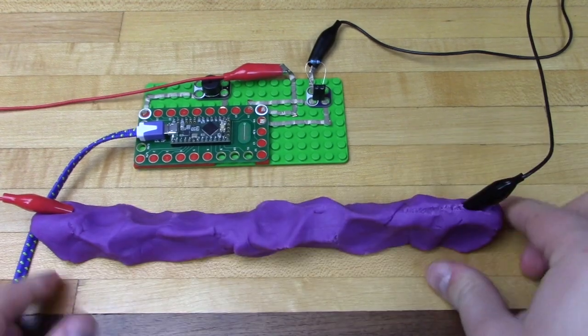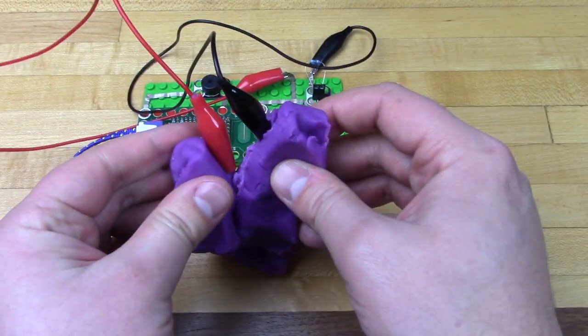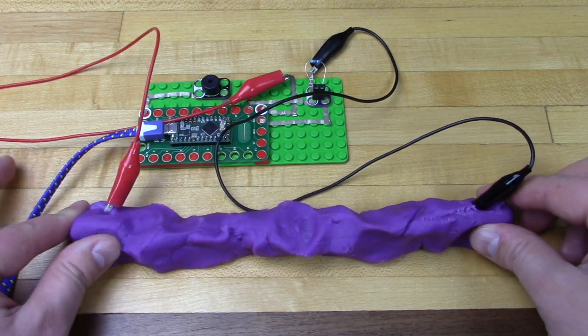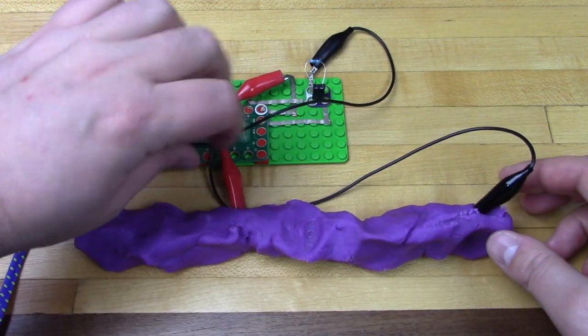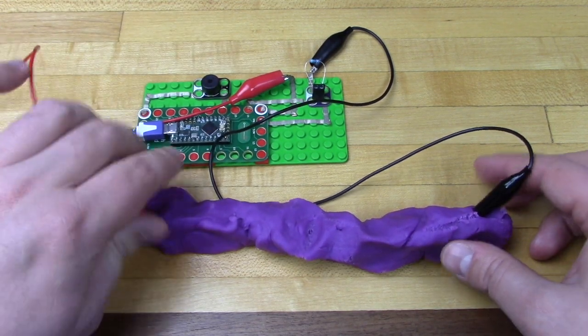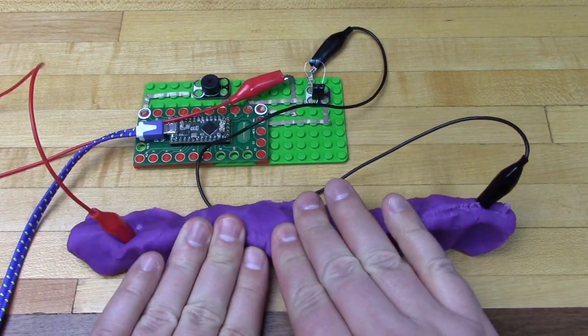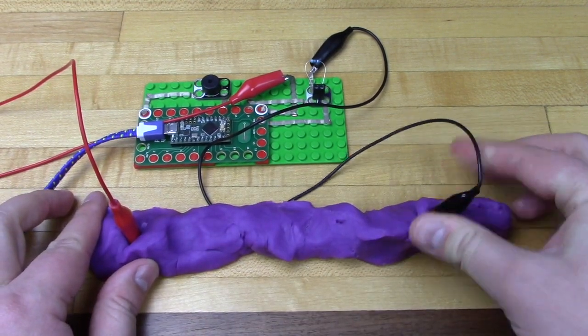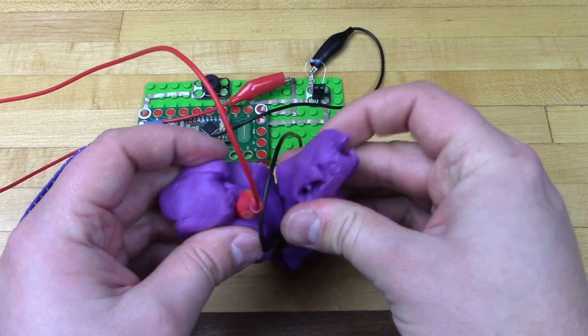Both sets of code work the exact same way. They measure the voltage change over the playdough itself. Same way it would work with a variable resistor. The longer the dough is, the more resistance there is, which means a lower voltage. The shorter the dough is or closer together it is, the less resistance there is and the more voltage that the Arduino circuit will see.